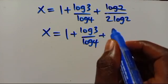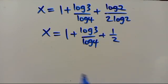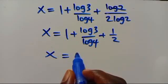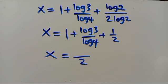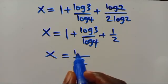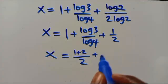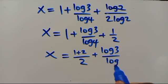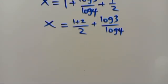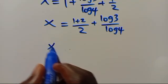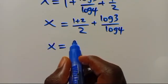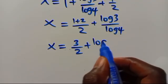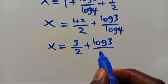From here we note that log 4 over log 4 gives 1/2 since log 4 equals 2 log 2. Combining terms: 1 plus 1/2 gives 3/2, so x equals 3 over 2 plus log 3 over log 4.